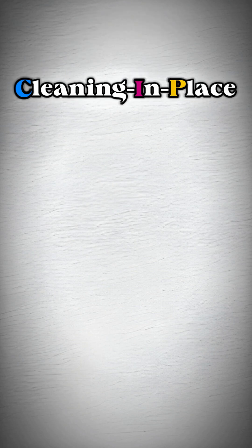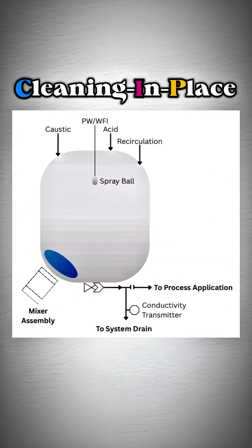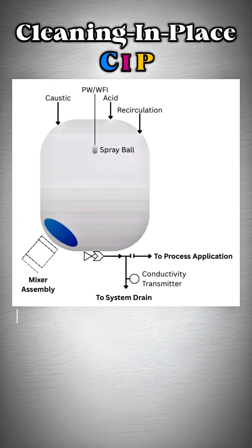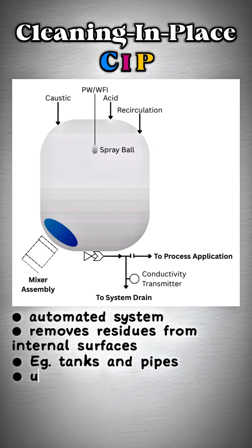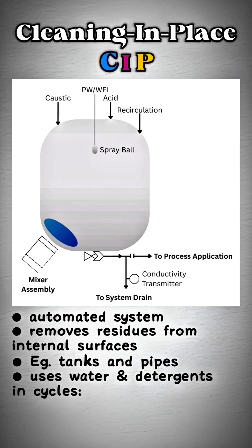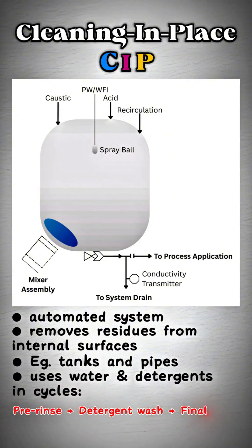CIP: Cleaning in Place. Cleaning in Place is an automated system that removes residues from internal surfaces like tanks and pipes. It uses water and detergents in cycles: pre-rinse, then detergent wash, then final rinse.